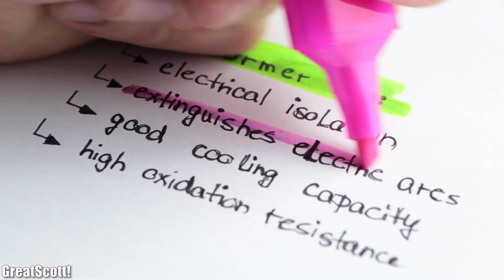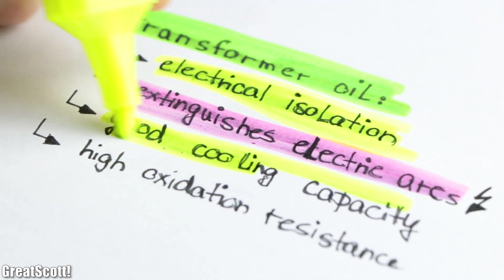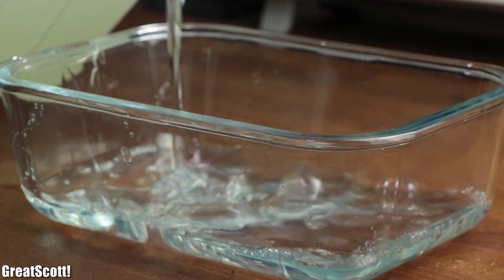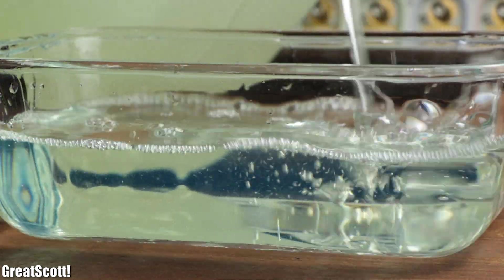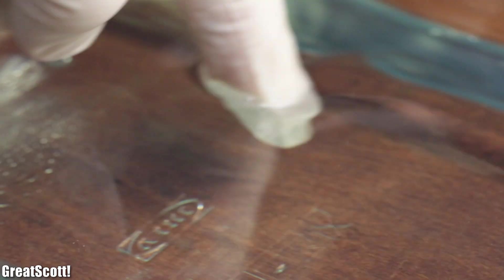Now I cannot properly test the extinguishing of electric arcs, but the other two properties we can certainly test. So I filled up a container with the oil and noticed immediately that it is a pretty clear substance that features a viscosity closer to water than cooking oil.